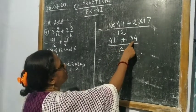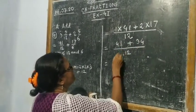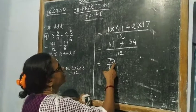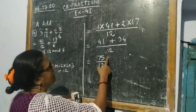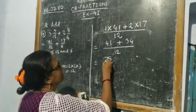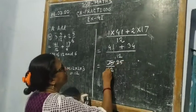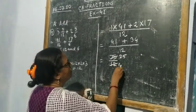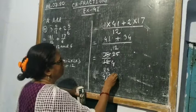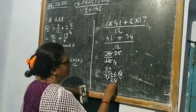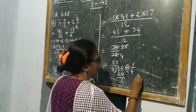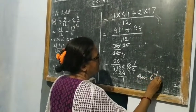So now children, 41 plus 34: 4 plus 4 is 8 — wait, 1 plus 4 is 5, and 4 plus 3 is 7. So 75 by 12. Now simplify: 75 and 12 share a common factor of 3. So 75 divided by 3 is 25, and 12 divided by 3 is 4. Now divide 25 by 4: 6 fours are 24, remainder 1. So the answer is 6 1/4.